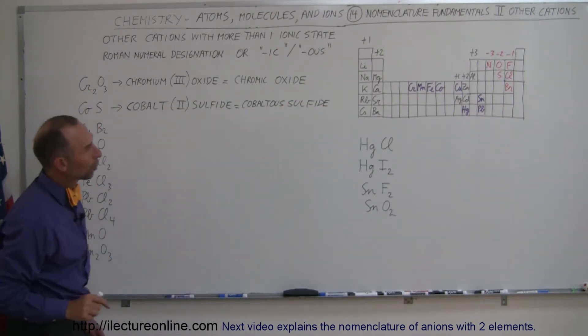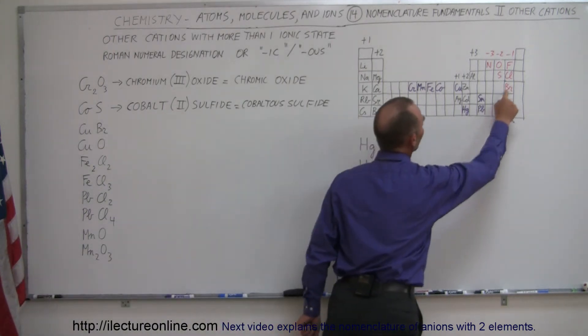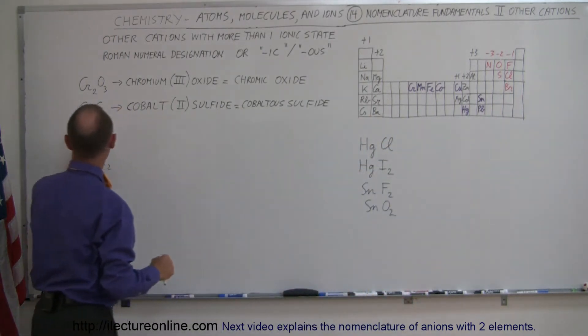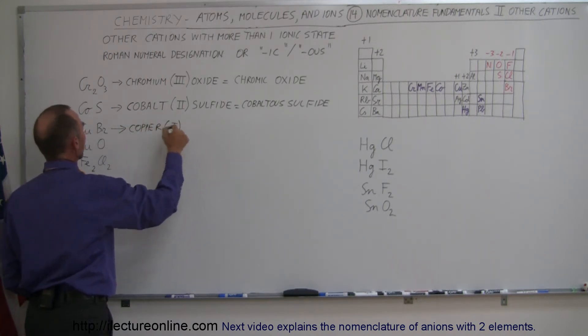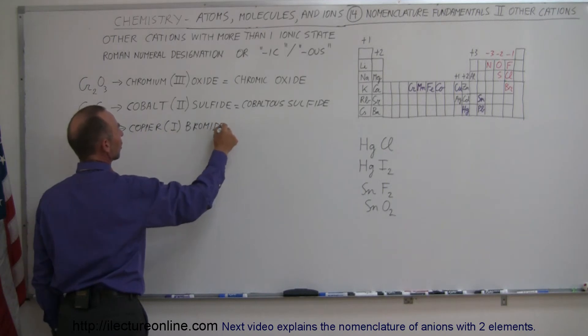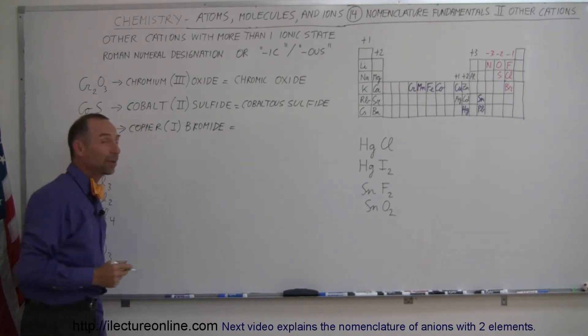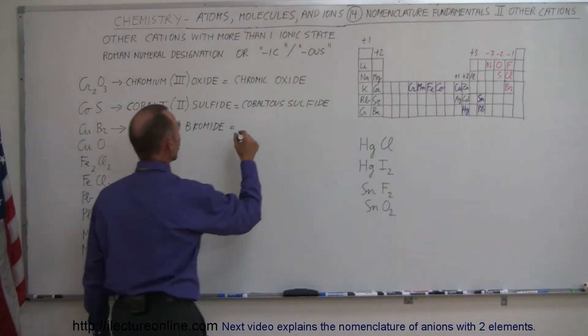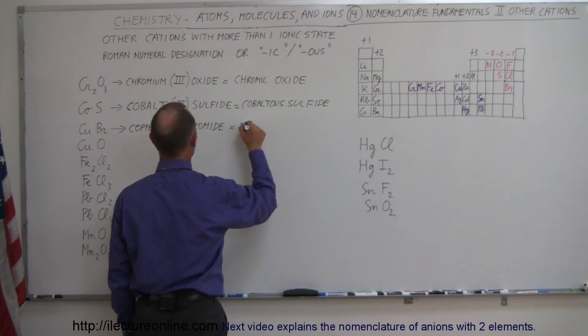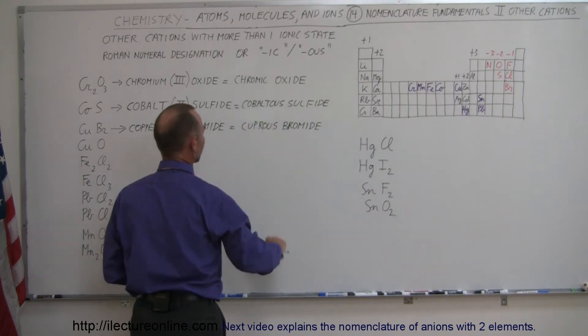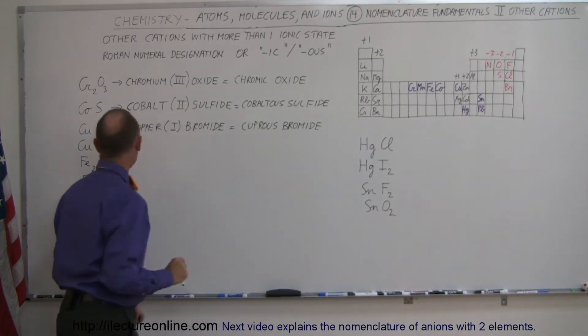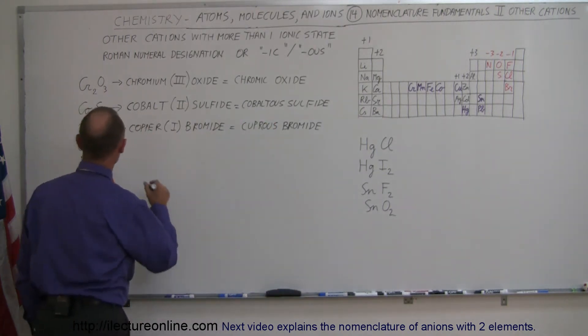Copper and bromine. Bromine here is at the minus one state. That means copper has to be at the plus one state, so we can call this copper one bromide. And since it's the lowest level which copper can be ionized, we call this cuprous bromide. This is CU for cuprous instead of copper. That's out of the old Latin name for copper.